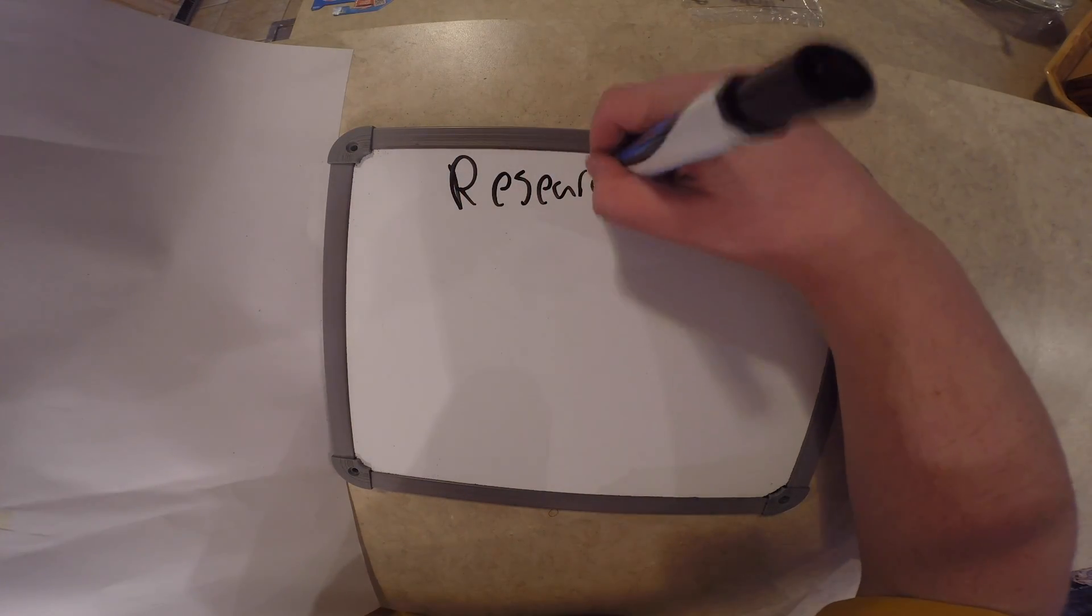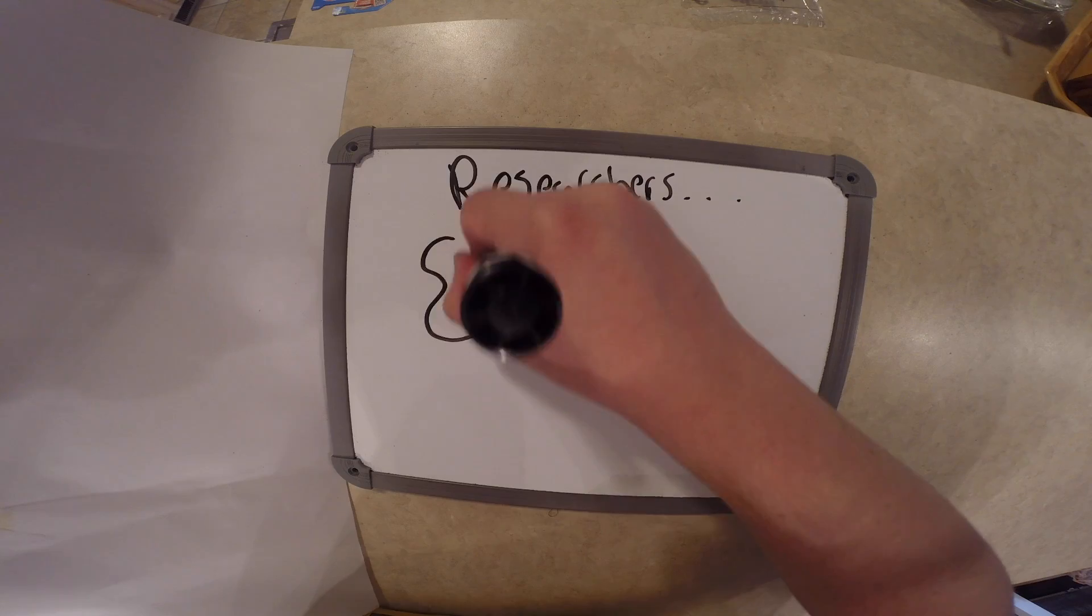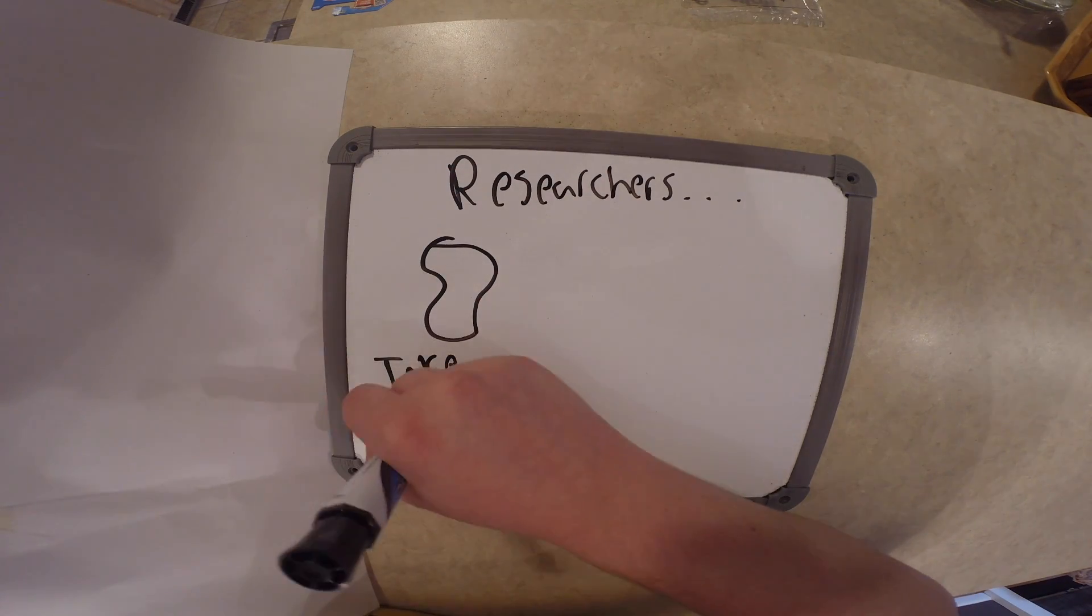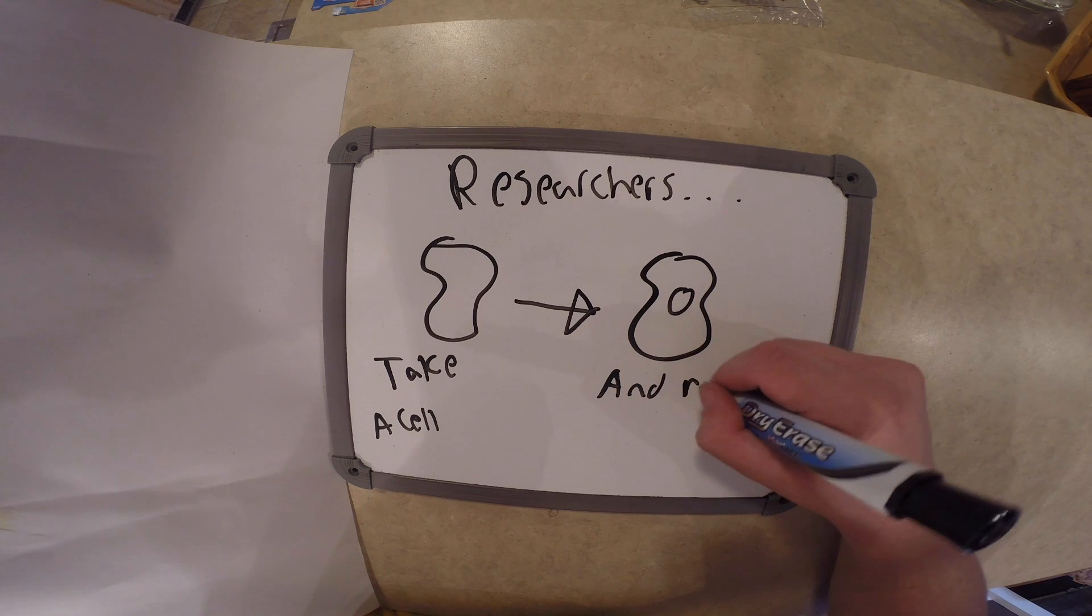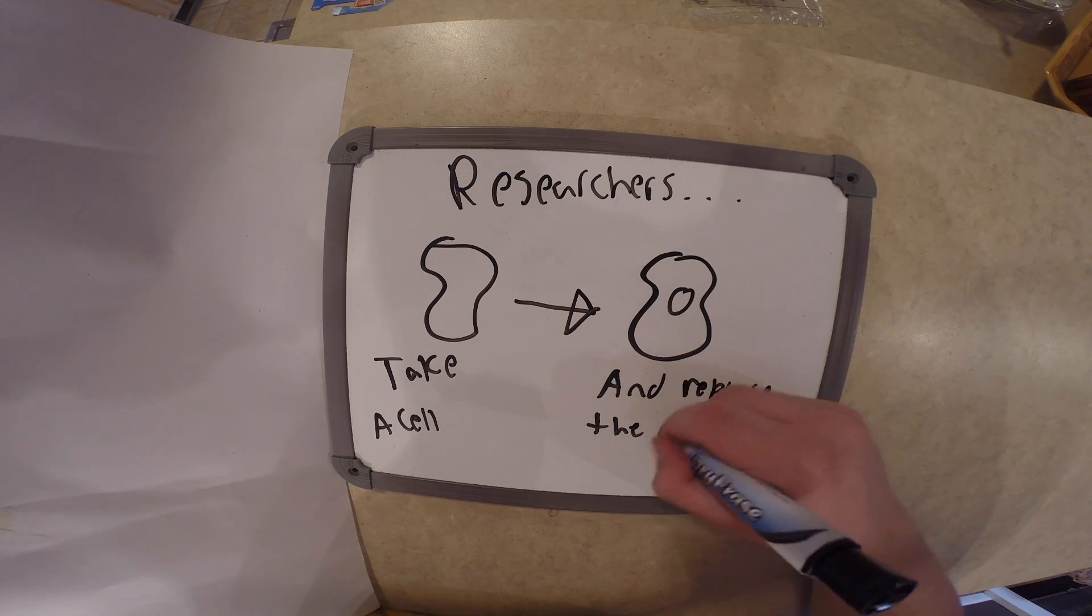Controlled cloning is a different story. Researchers usually clone by first taking a cell, most often from the skin, and placing the DNA from the cell into an egg cell that's had its nucleus removed.